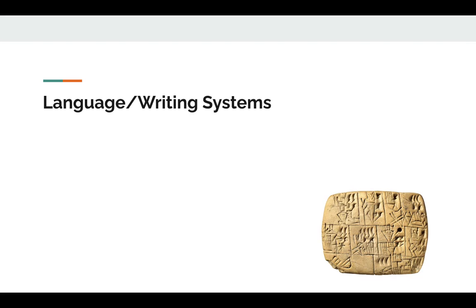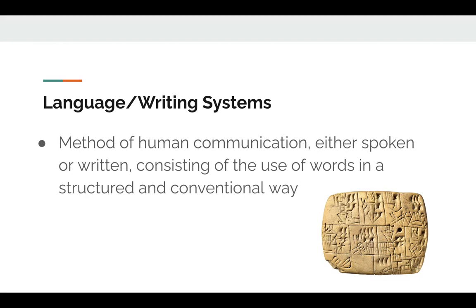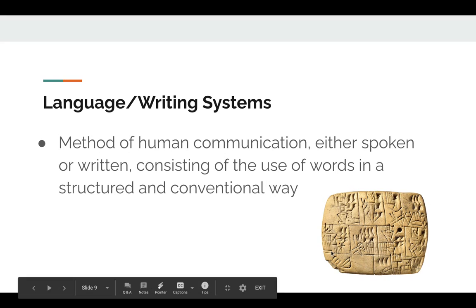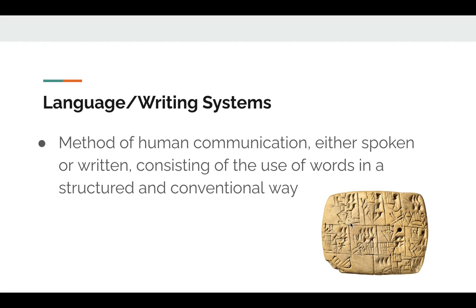Civilizations have language and writing systems. This is a method of human communication, either spoken or written, consisting of the use of words in a structured and conventional way. Most people speak English, but we also have many other languages — Spanish, Mandarin Chinese, Urdu. There is no official language of the United States. We do have a writing system — we write in English or whatever language you speak. This is an example of Sumerian writing called cuneiform, which we'll learn about.